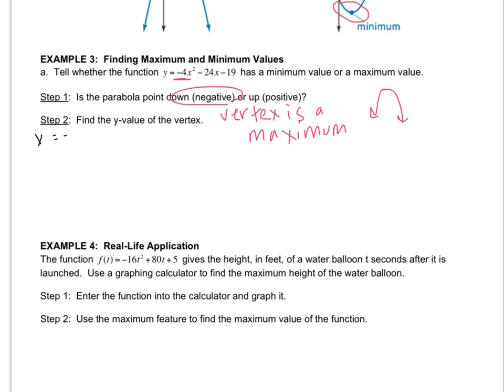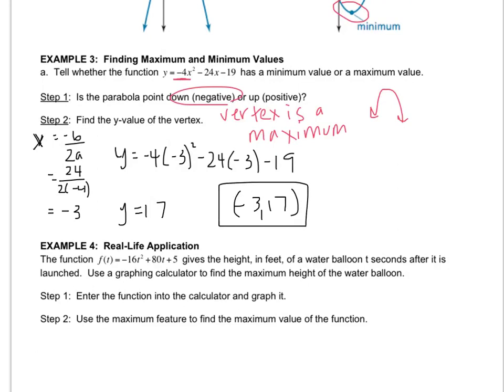So we use our formula, negative b over 2a, and that's 24 over 2 times negative 4, which ends up being negative 3. So plug in negative 3 into the function. And I'm going to skip right to what you get. You should get 17. So the vertex is negative 3 comma 17. Make sure you get 17.